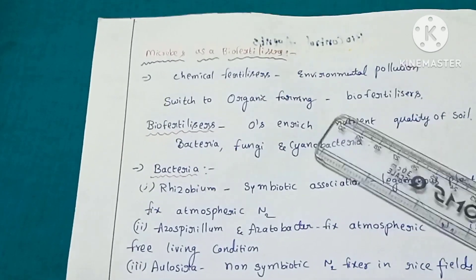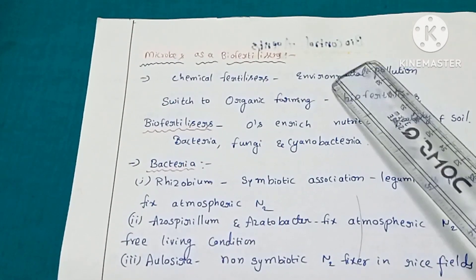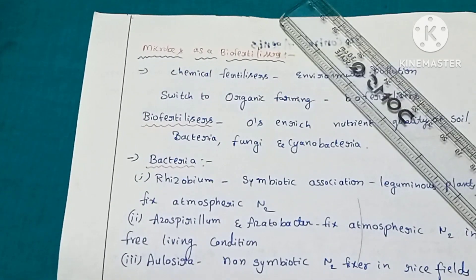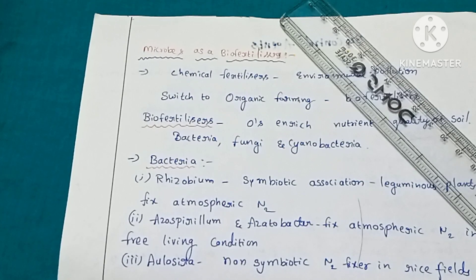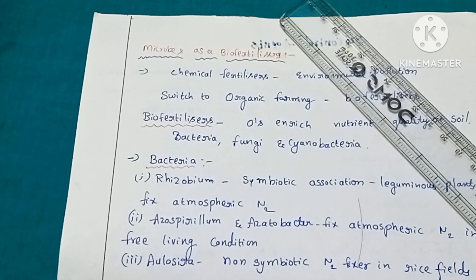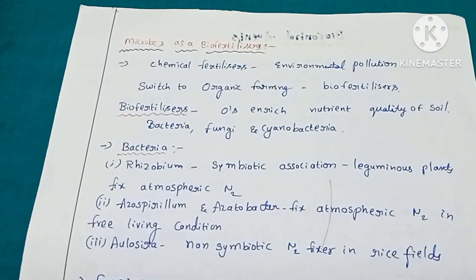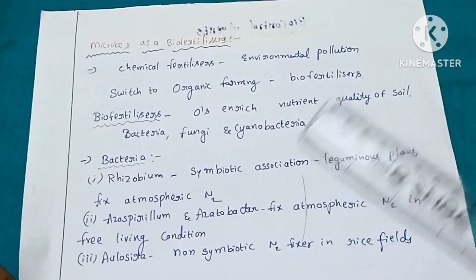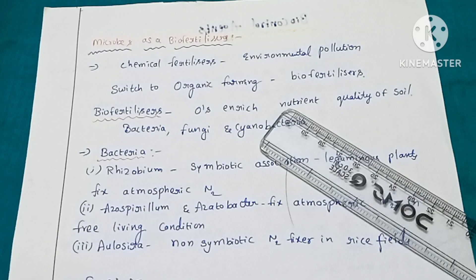Now we move to biofertilizers. Farmers use chemicals called fertilizers to enhance the growth of plants and increase soil fertility, supplying nutrients like nitrogen, phosphorus, and potassium. However, these chemical fertilizers cause environmental pollution problems. To avoid this, we have switched to organic farming, where we use biofertilizers.